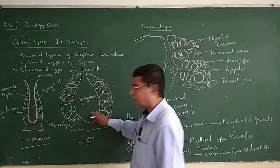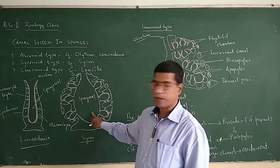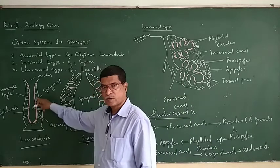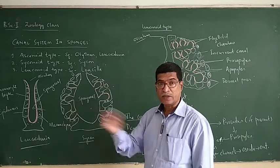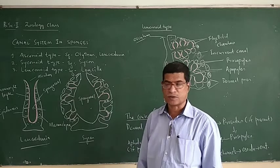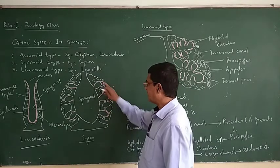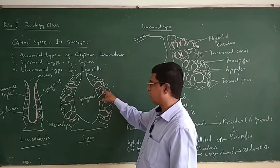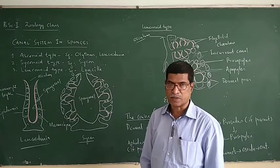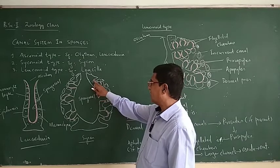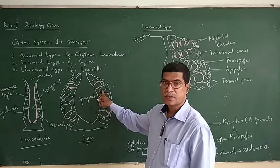In the syconoid type, the spongocoel is not lined by choanocyte layer; it is lined by the epidermal layer. The choanocyte layer is forming the outward folds and small chambers — the wall is folded. There is also development of another canal called the incurrent canal. The incurrent canal is present between two adjacent flagellated chambers, so incurrent canals and flagellated chambers alternate with each other. These incurrent canals open to the exterior through dermal ostia.